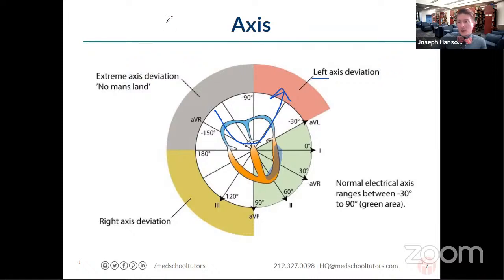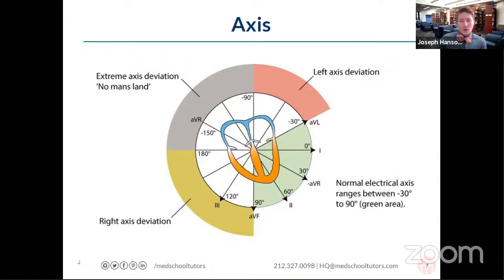Alternatively, someone with isolated right-sided ventricular hypertrophy might see electrical activity bend down towards the right ventricle. Axis can represent too much electrical flow in one direction due to interruptions in the electrical signal — right bundle branch block, left bundle branch block — or alternatively because of thickening and hypertrophy of some of the cardiac tissue.